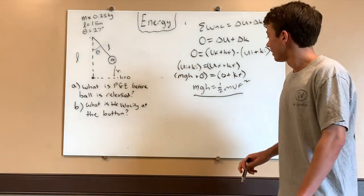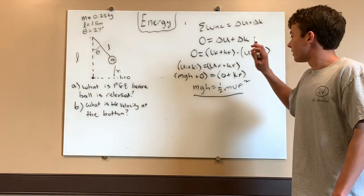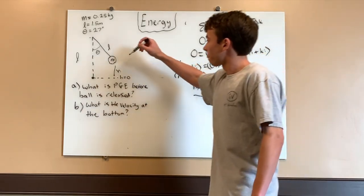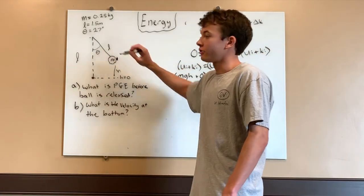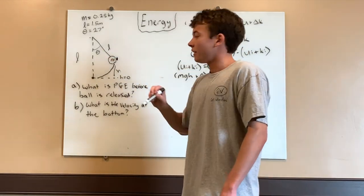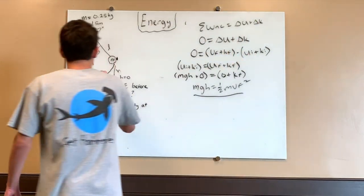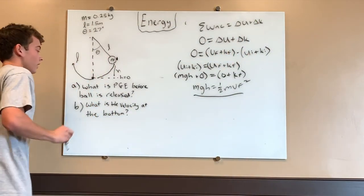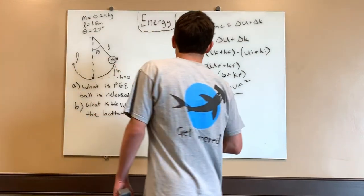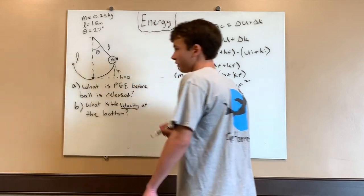This equation is essential because it shows exactly how mechanical energy is conserved: our gravitational potential energy at the top equals our kinetic energy at the bottom. As the ball makes its way down, it transfers more and more potential energy to kinetic, and once it goes back up, that kinetic energy transfers back to potential.